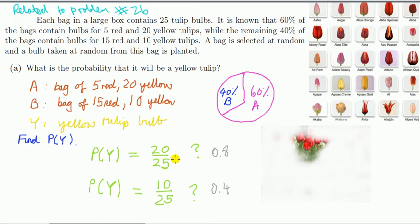This is 0.8, this is 0.4. If we use common sense, would we expect our answer to be closer to one of these numbers? You've got 60% of the bags of type A, and type A has a higher proportion of yellows than B. Your answer should be closer to the probability of bag A. So your answer should be closer to 0.8 than 0.4.